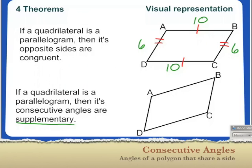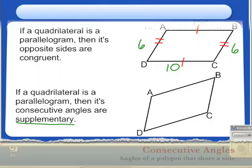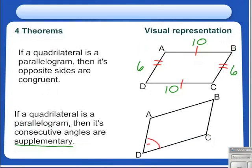And consecutive means next to each other. So if we give angle D a value of 50 degrees, we know angle A is consecutive, is next to angle D. So to find out its value, we would do 180 minus 50 to get 130. So angle A and angle D are supplementary. They are equal to 180 degrees.